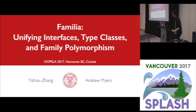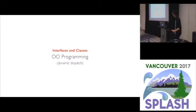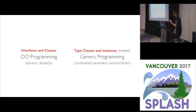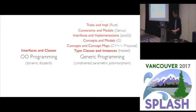The new language design unifies interfaces, type classes, and family polymorphism. Interfaces and classes are how object-oriented programming is done in most statically-typed languages. Objects communicate with each other by dynamically dispatching the methods exposed by their interfaces. Meanwhile, type classes and their instances provide useful leverage to generic programming. They were originally proposed for Haskell but have gained popularity in later language designs. Type classes specify constraints on type parameters, and type class instances satisfy constraints for specific types.